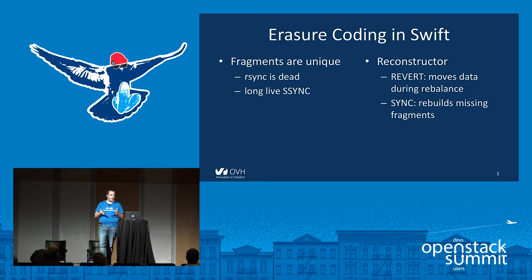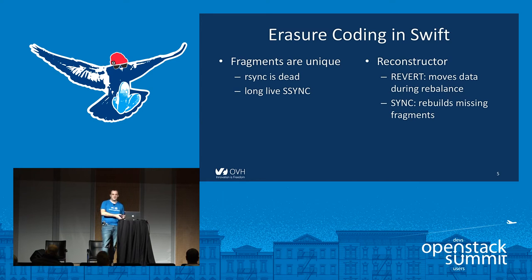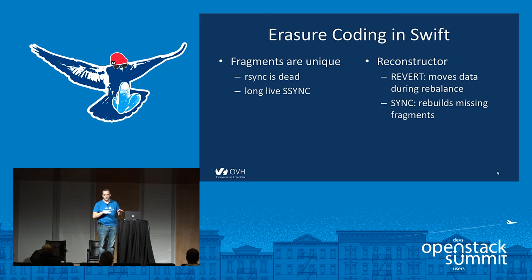So instead of having the object replicator for replica, we now have the object reconstructor. The object reconstructor does two kinds of jobs: first, a revert job, which moves data to the correct device — for example after a rebalance. And the second job is the sync job, which rebuilds the missing fragments.